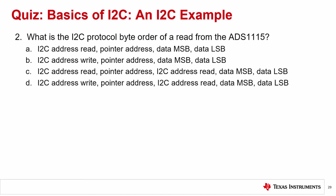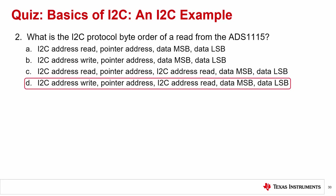Question 2: What is the I2C protocol byte order of a read from the ADS-1115? The correct answer is D: I2C address write, pointer address, I2C address read, data MSB, data LSB. While the objective of this sequence is to read the conversion register, we still need to tell the target device what register the controller wants to read from. Notice that we first write to the pointer register before we can read that register.